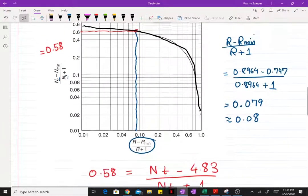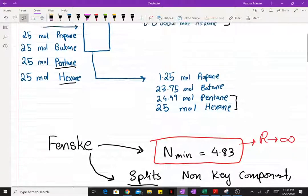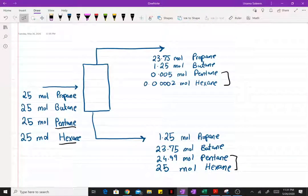So the accuracy of the shortcut method is, like, it should not be taken as the final design. This should be an initial guess to a more rigorous model.